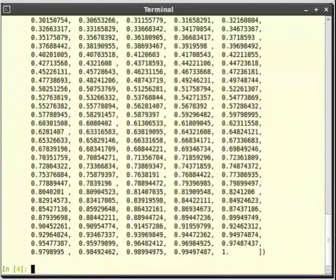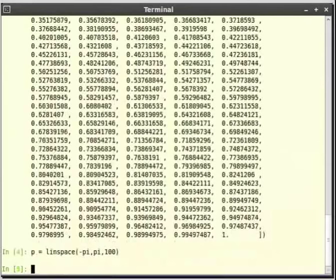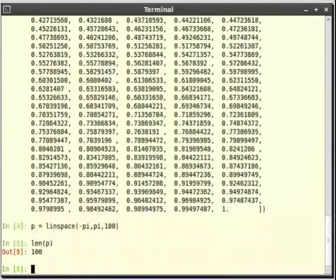Let's try and get 100 points between minus pi to pi. Here pi is a constant defined by pylab. Save this to the variable and say p. If we now type len within brackets p, we will get the number of points. Len function gives the number of elements of a sequence.